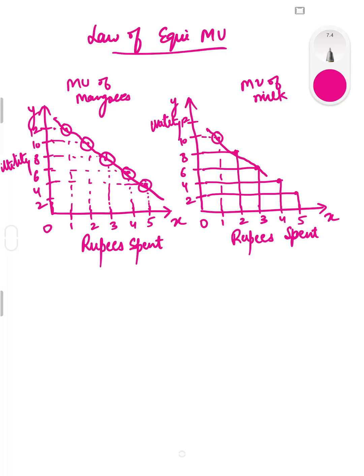As you can see, the consumer gets equi-marginal utility when the last rupee spent on mangoes and milk gives the same marginal utility. This is called the equi-marginal utility line. It represents that when the consumer spends 3 rupees on mangoes and 2 rupees on milk, he gets equi-marginal utility.